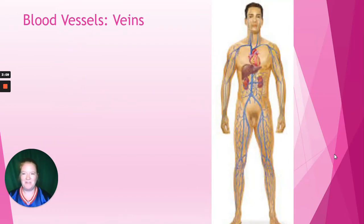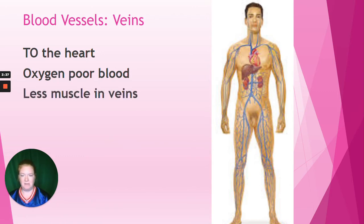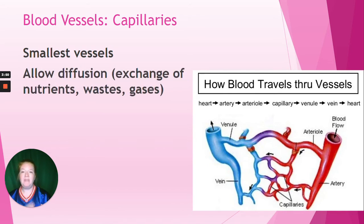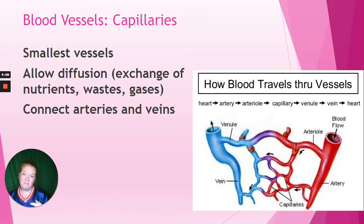Veins are the opposite - they go to the heart, not away from it. They carry oxygen-poor blood, again with one exception. Blood is not blue and veins are not really blue - it has to do with the way light is reflected and absorbed through your skin. There's a lot less muscle in veins. Then we have capillaries, which are tiny - the smallest vessels, one cell layer thick. They allow diffusion, so all nutrients, wastes, and gases are exchanged at the level of the capillaries. They connect arteries and veins - arteries get smaller and smaller until they're one cell thick and become capillaries, then capillaries get bigger and bigger and become veins.